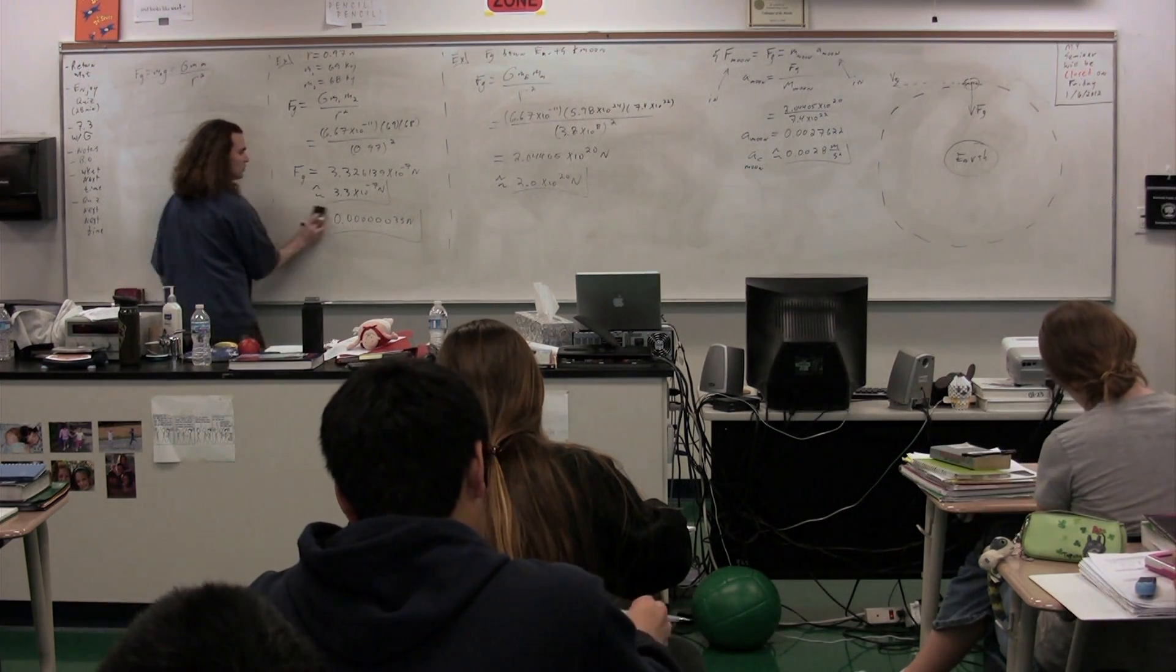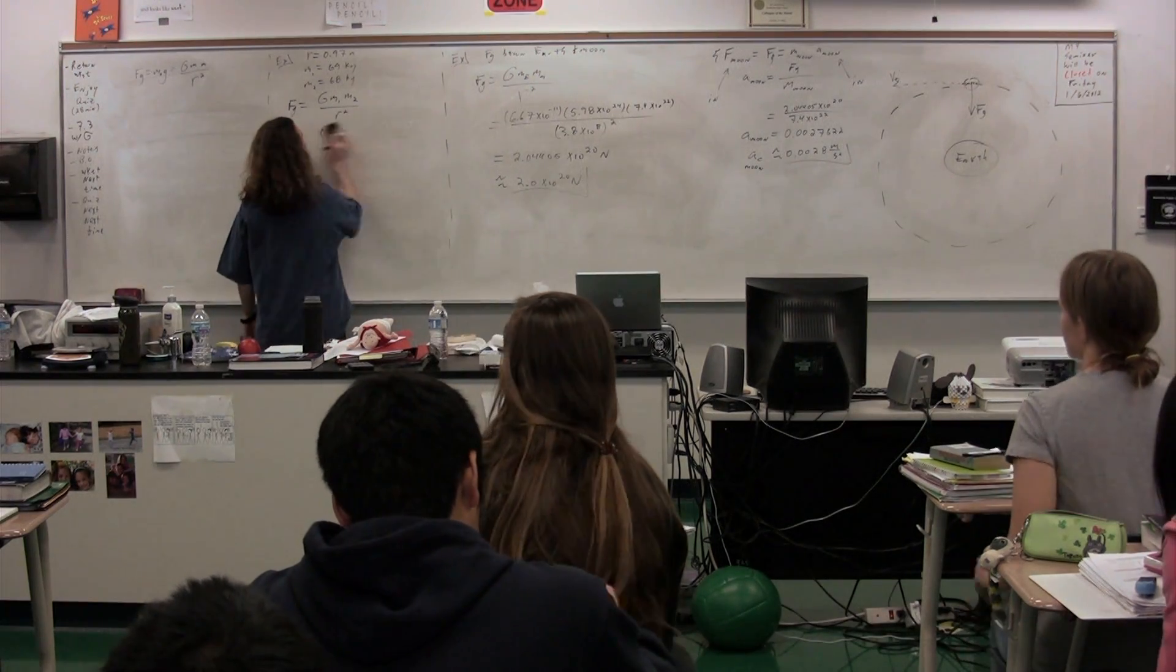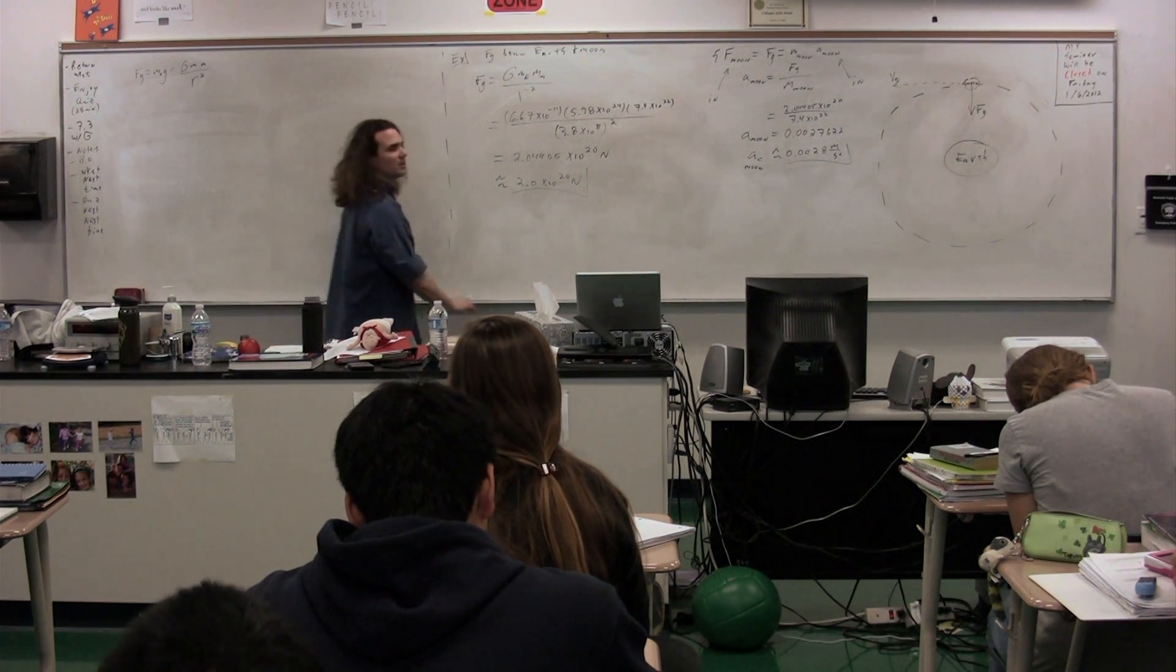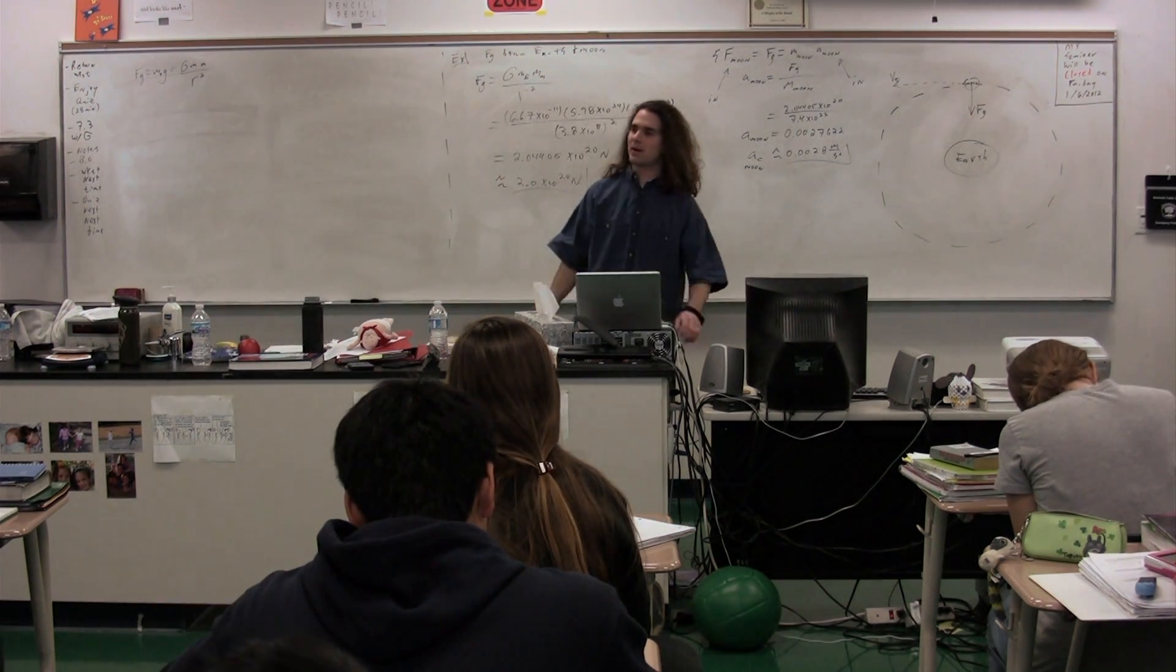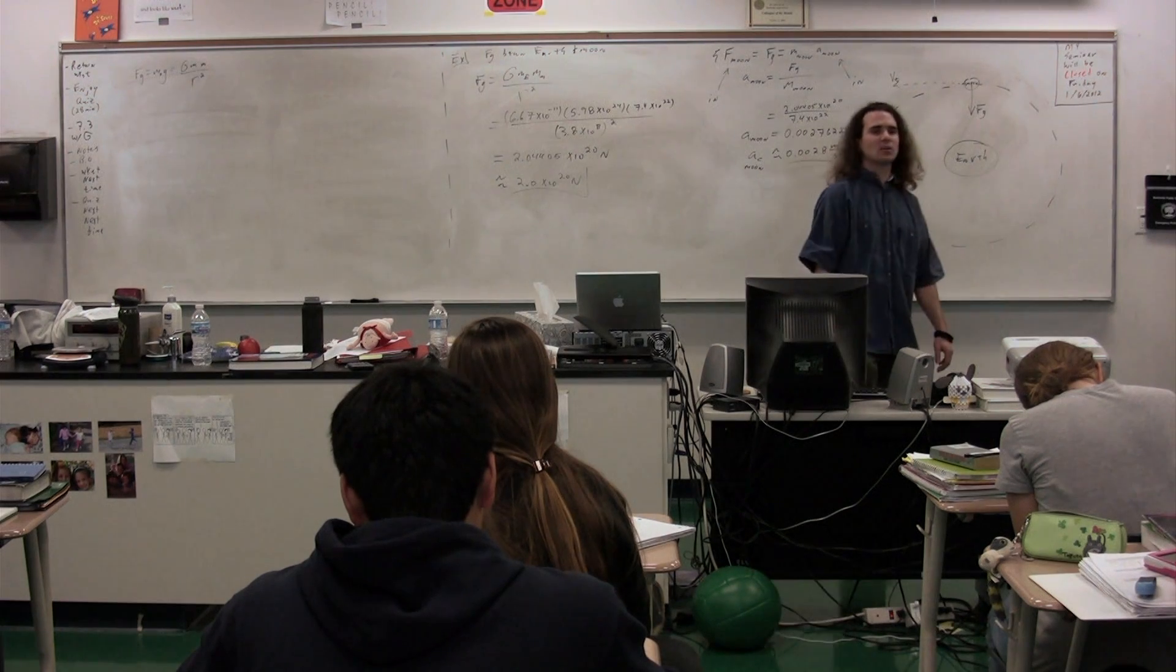So when we're talking about the force of gravity, which equals mass of the object times the acceleration of gravity, and we're setting that equal to big G times mass 1 times mass 2 divided by r squared, what are the 1 and 2 in that equation?